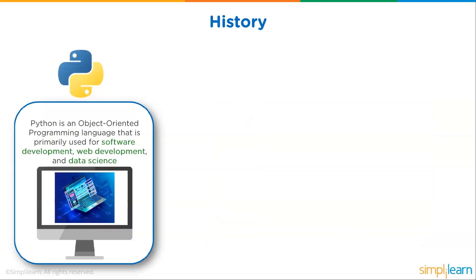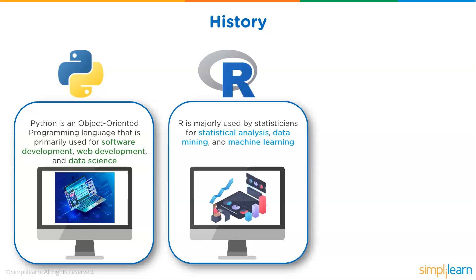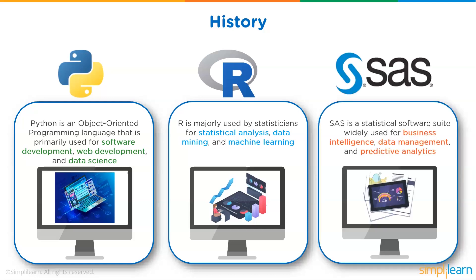So let's look at where these came from. Python is an object-oriented programming language primarily used for software development, web development, and data science — it originally wasn't designed for data analysis. R is majorly used by statisticians for statistical analysis, data mining, and machine learning — it was designed just for data analysis. And SAS is a statistical software suite widely used for business intelligence, data management, and predictive analysis, and like R, it's designed specifically for data science.